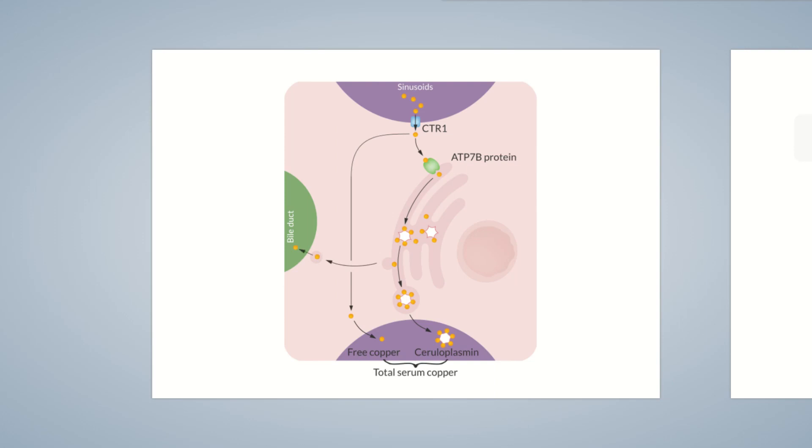Let's briefly recap the role of hepatocytes in copper metabolism. Hepatocytes absorb copper from the blood and release most of it as ceruloplasmin into the blood if the body requires copper. If copper isn't required, excess amounts are excreted into the bile.